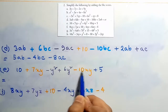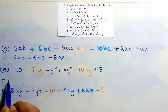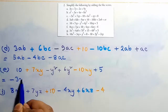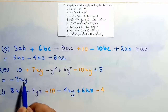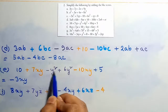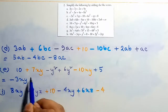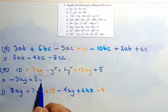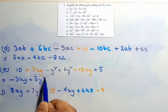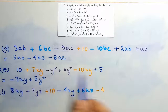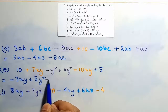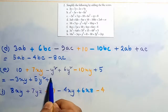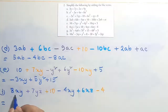Next: 7xy minus 10xy gives minus 3xy. y² plus 6y² gives plus 5y². And 10 plus 5 gives plus 15. For the yz terms: 7yz, and for xy terms: 8xy minus 4xy gives 4xy.